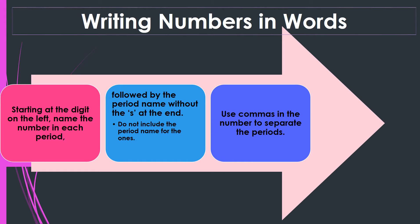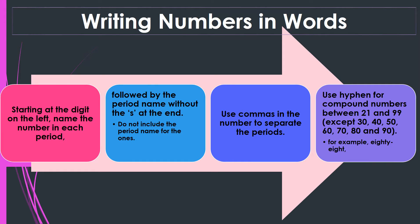Use a hyphen for compound numbers between 21 and 99, except 30, 40, 50, 60, 70, 80, and 90. For example, 88 would be written with a hyphen as eighty-eight.